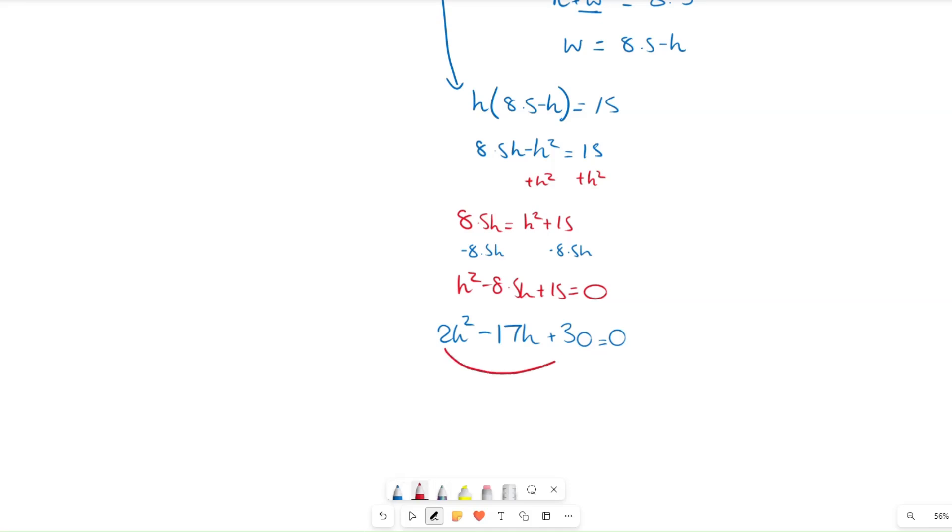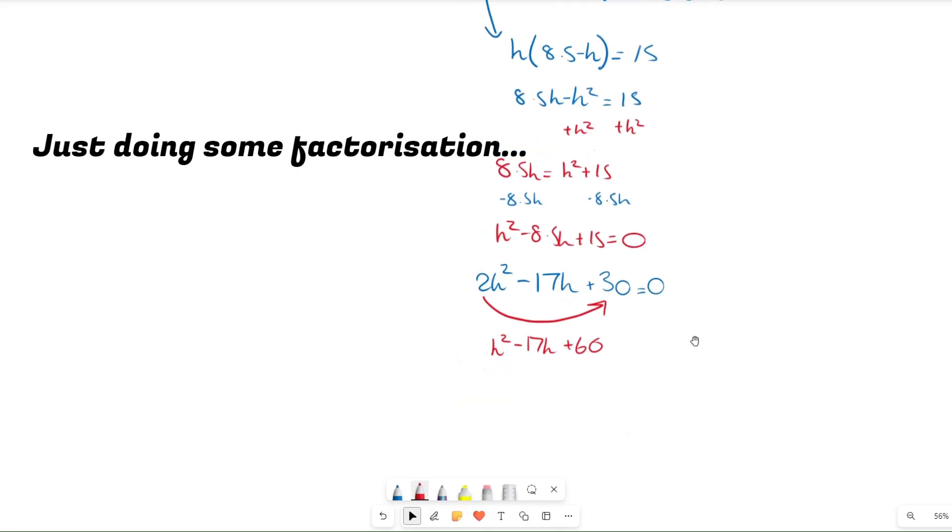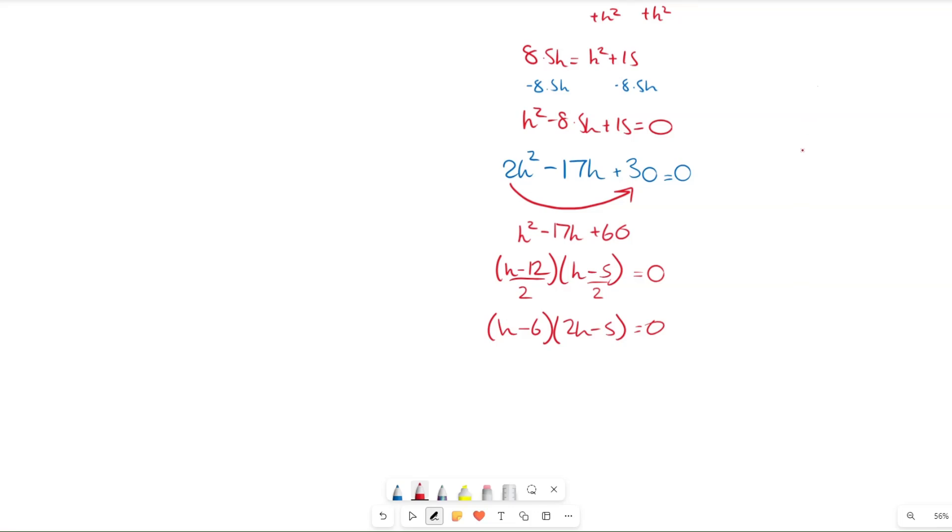I'm just going to quickly use the slide and divide method, just so we can save a bit of time. And then we get two solutions. They're both positive, which we both can accept. I'll show you in a moment though. h equals 6 and h equals 5 over 2.